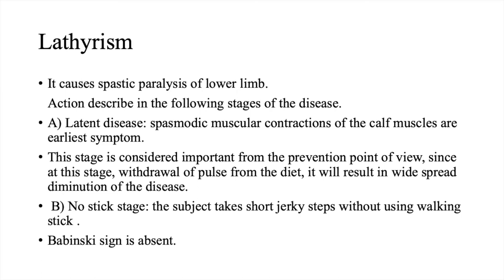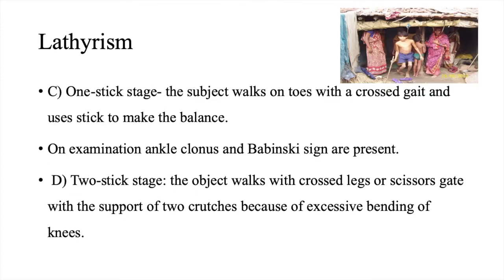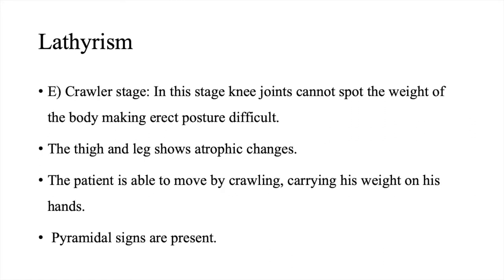The second stage is the no-stick stage, where the subject takes short jerky steps without using a walking stick, and Babinski sign is absent. The third stage is the one-stick stage — the subject walks on toes with a crossed gait and uses a stick to maintain balance. On examination, ankle clonus and Babinski sign are present. The fourth is the two-stick stage — the patient walks with crossed legs or scissor gait with the support of two crutches because of excessive bending of the knees. The fifth is the crawler stage — in this stage knee joints cannot support the weight of the body, the thigh and leg show atrophic changes, and the patient is able to move only by crawling. Pyramidal signs are present.